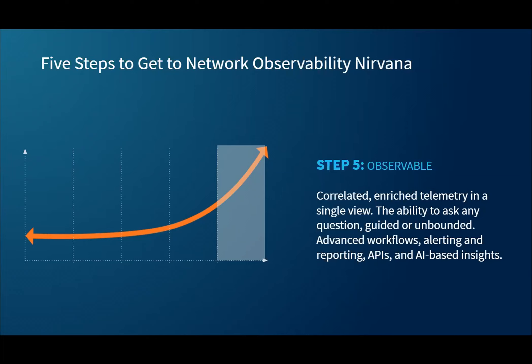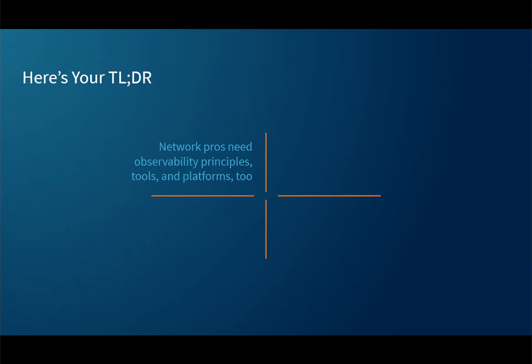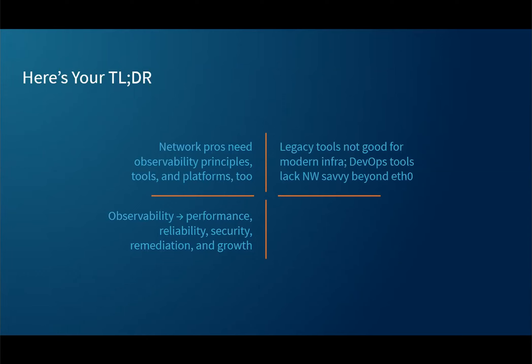What's the net of what we covered today? Back in the day we called this the conclusion, but nowadays it's the TLDR — which sounds much cooler. First, network professionals like yourself need observability principles, tools, and platforms — not just at the compute and application layer, but really at the network, because we've seen that today's networks need to work flawlessly. We think that observability leads to better performance, reliability, security, remediation, and also growth. Hopefully we've made the case that the legacy tooling out there is probably not good enough for modern infrastructure — for the cloud pieces now involved and for the internet.